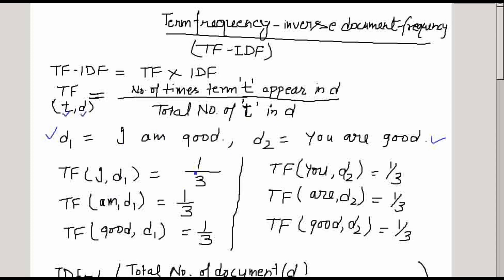The total number of terms in D1 is three — 'I', 'am', 'good' — so the term frequency is 1/3. Likewise, when we calculate the term frequency for 'am', it is again 1/3 because 'am' appears one time and the total number of terms is three.